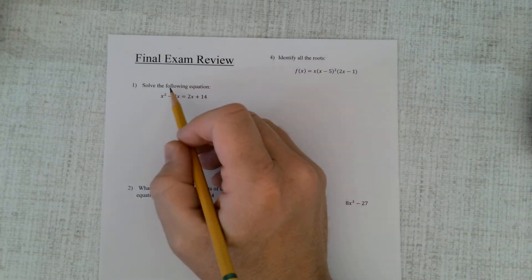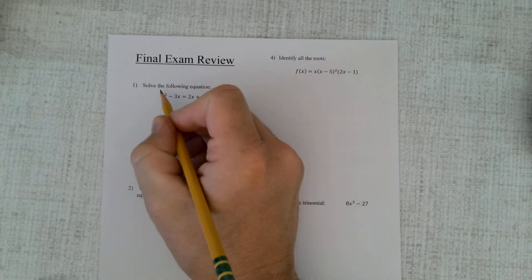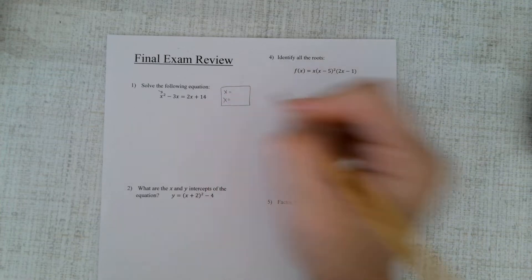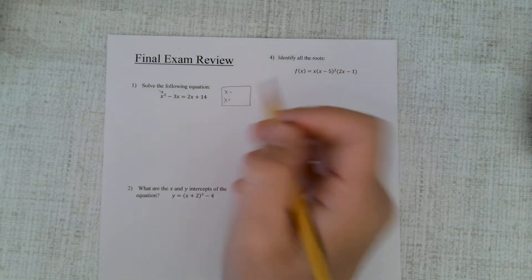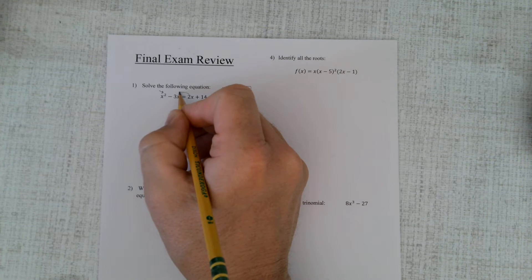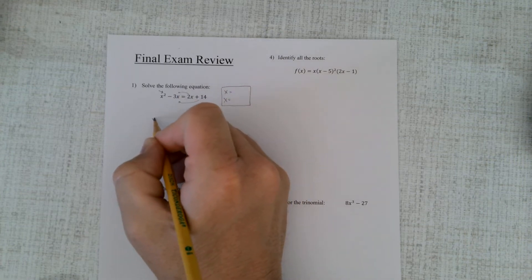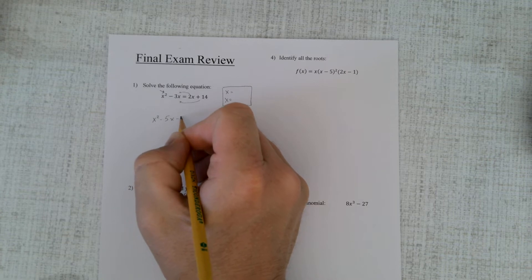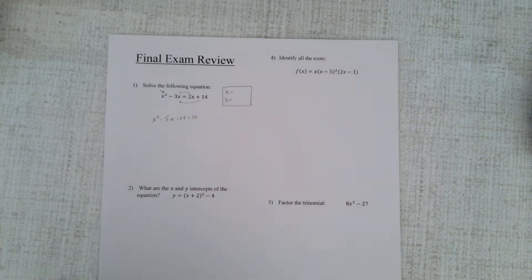Number one, solve the following equation. Well, this two up here means it is quadratic, meaning there's two solutions. So at the end of the day, we're going to have to find both of those solutions. The easiest way to do this is to set it equal to zero. So I'm going to move this over here and this over here, and it's going to be x² - 5x - 14 = 0.